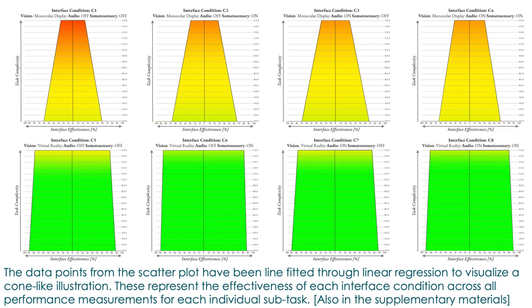We summarize the effectiveness of all conditions across all manipulation tasks with increasing complexity by equally weighting and averaging all these subjective and objective measurements into one final percentage value. More specifically, the data points from the scatterplot have been line fitted through linear regression to visualize a cone-like illustration.